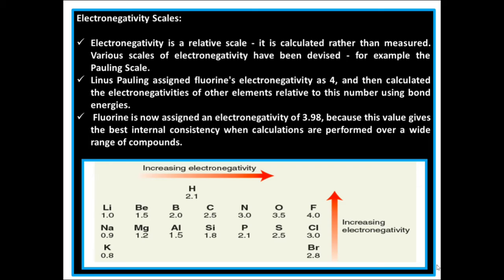Electronegativity scale. Electronegativity is a relative scale. It is calculated rather than measured. Various scales of electronegativity have been devised, for example the Pauling scale. Linus Pauling assigned fluorine's electronegativity as 4, and then calculated the electronegativity of other elements relative to this number using bond energies. Fluorine is now assigned an electronegativity of 3.98, because this value gives the best internal consistency when calculations are performed over a wide range of compounds.